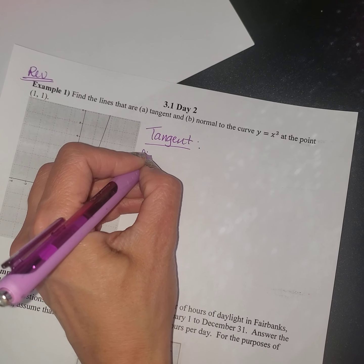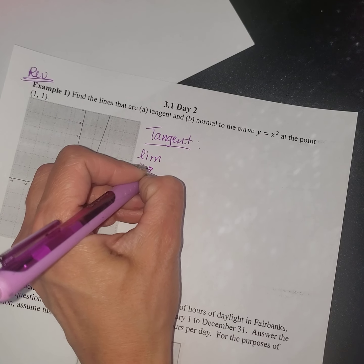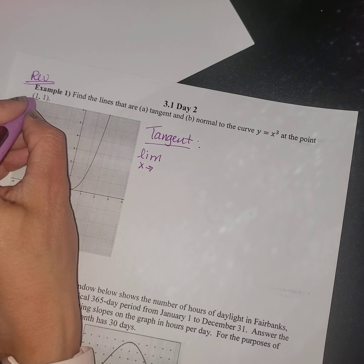All right guys, here is 3.1, day two. So this first problem here is pretty much a review, but we're going to find the derivative, which is the slope of the tangent line, and we're going to use the alternate definition of finding a derivative. Still means the slope. So this is basically a review from the previous notes that we just took. So let's go ahead and find that tangent line to this curve.